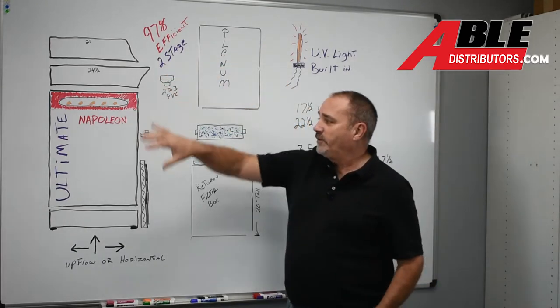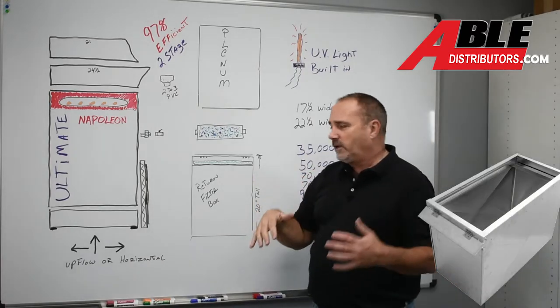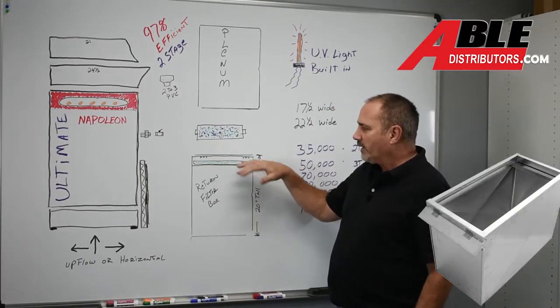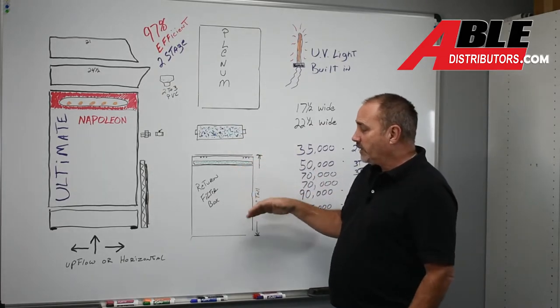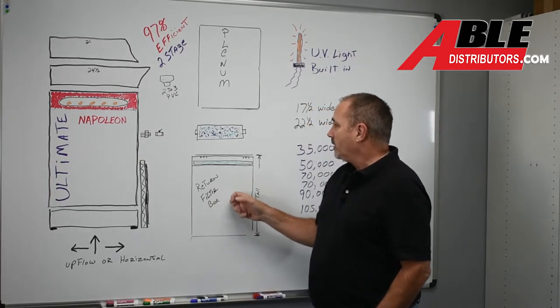We've got plenums that will fit these things perfectly. We've got return filter boxes that sit underneath. It's got a filter and a little flap door. That's another nice way to go. They're 20 inches tall. So if you've got the height, that's a very nice way to go.